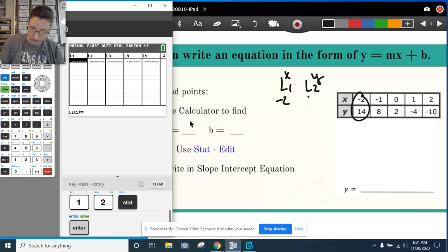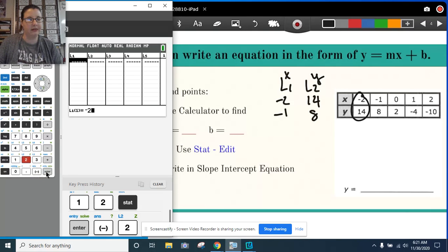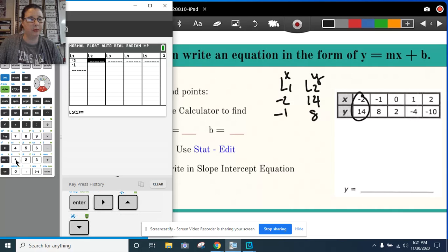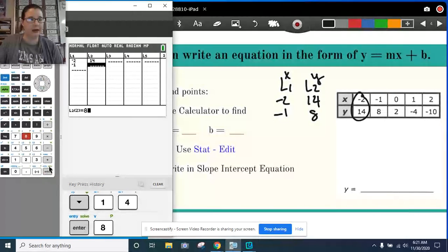So this number, negative 2, 14, and negative 1, 8. This is how I want to enter my information. So I'm going to enter negative 2 and negative 1. And then I go over to L2, and under L2, I put 14 and 8.